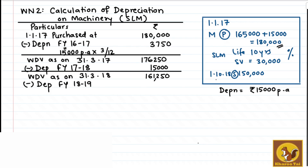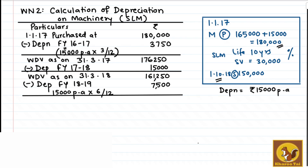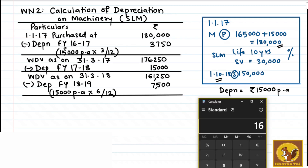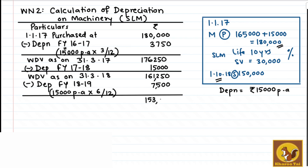The sale date is 1st October 2018, meaning the asset was used for only 6 months — April, May, June, July, August, September. On 1st October the asset was sold, so depreciation will be calculated for 6 months: 15,000 per annum into 6 divided by 12, which equals 7,500. So from 1,61,250 minus 7,500, we get a WDV as on 1st October 2018 of 1,53,750.